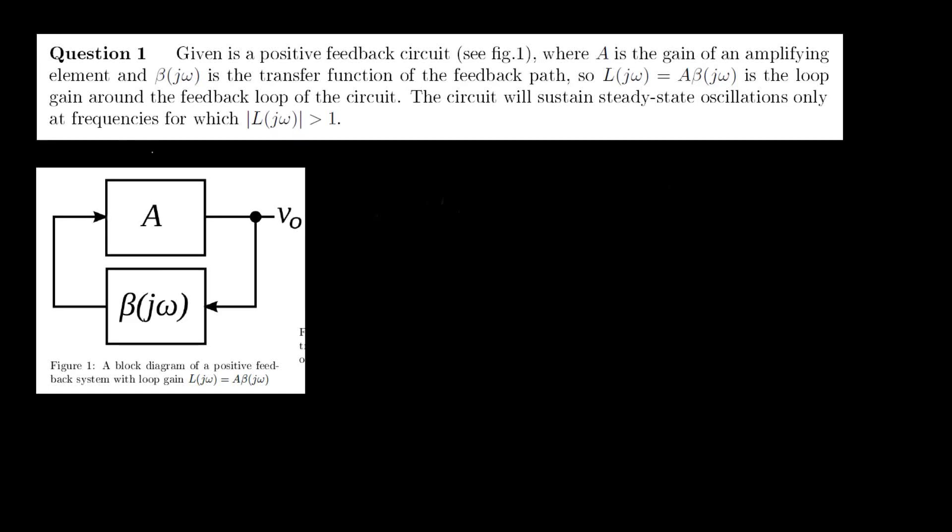In this video we'll discuss question one which goes as follows. Given is a positive feedback circuit, see figure 1 which is the figure here below, where A is the gain of an amplifying element and beta is the transfer function of the feedback path.